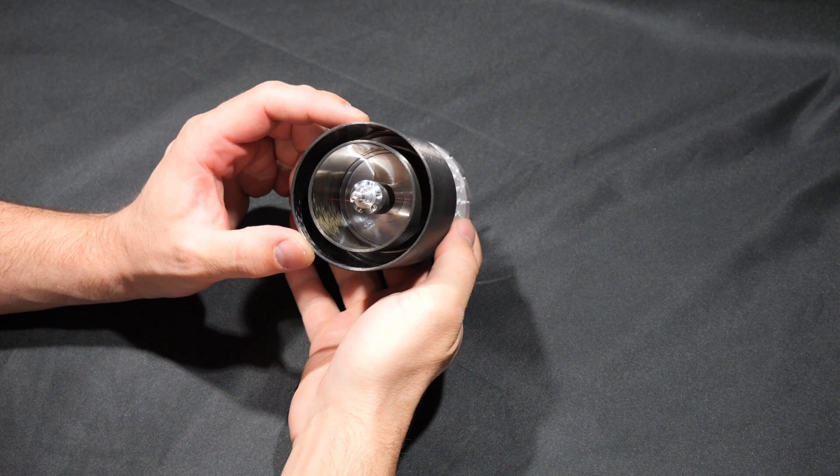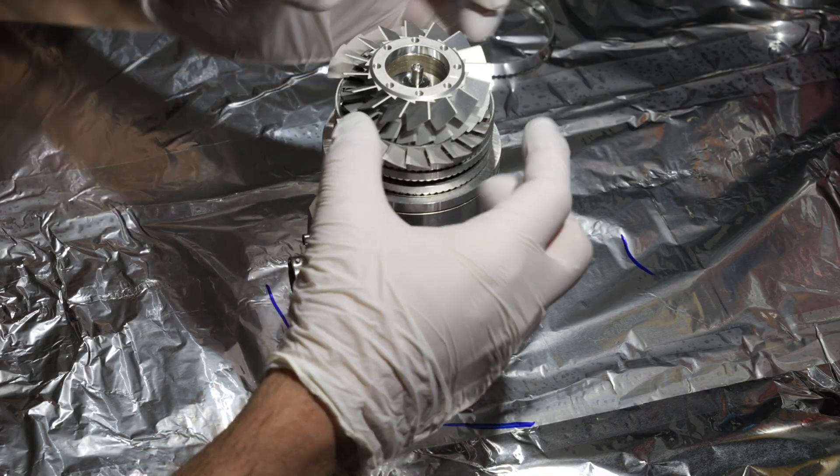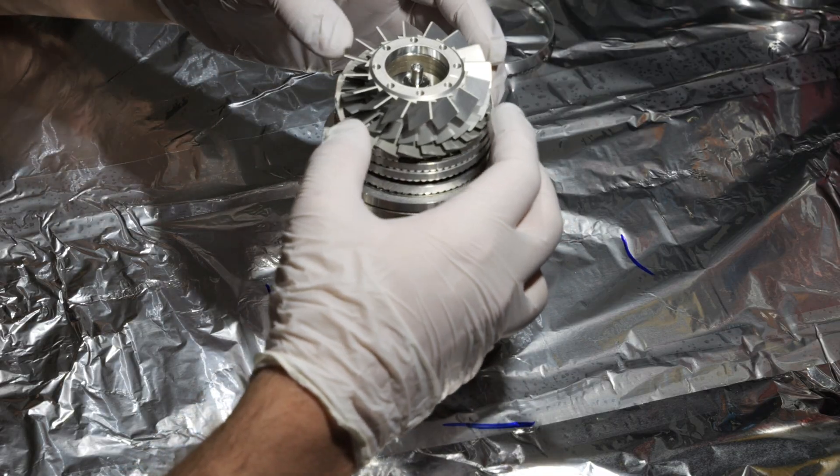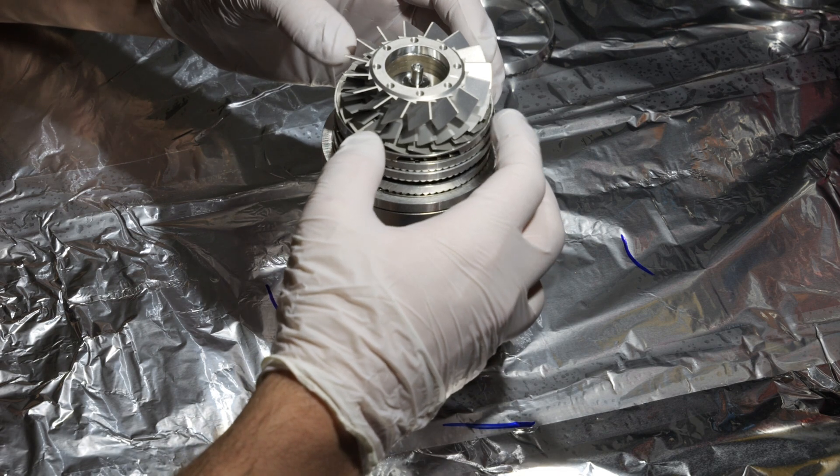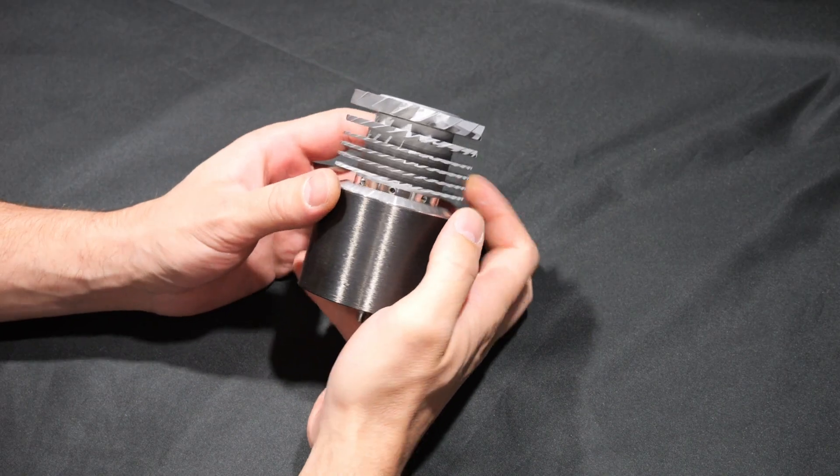This rotor spins at 90,000 revolutions per minute, which is 1,500 revolutions per second. To ensure the rotor doesn't self-destruct at these speeds, it must be very finely balanced.